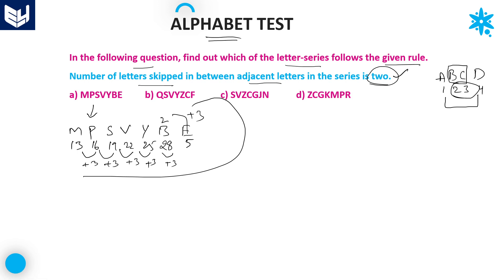If the difference between any two adjacent letters is 3, it means the number of letters skipped between adjacent letters is definitely 2. For example, A is 1 and D is 4 — the number of letters skipped between these two is 2, that is B and C, and the difference is 3. So the condition is satisfied for the first option only. Option A is the right answer.